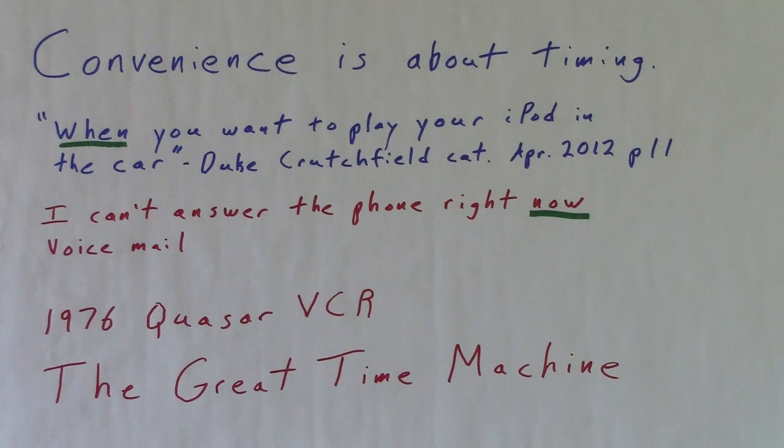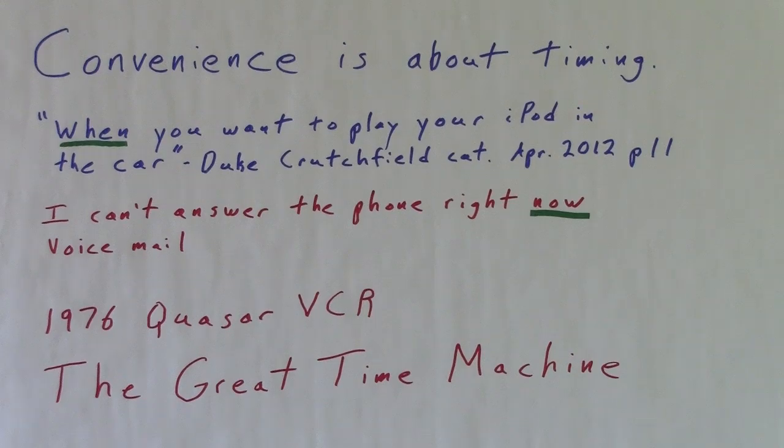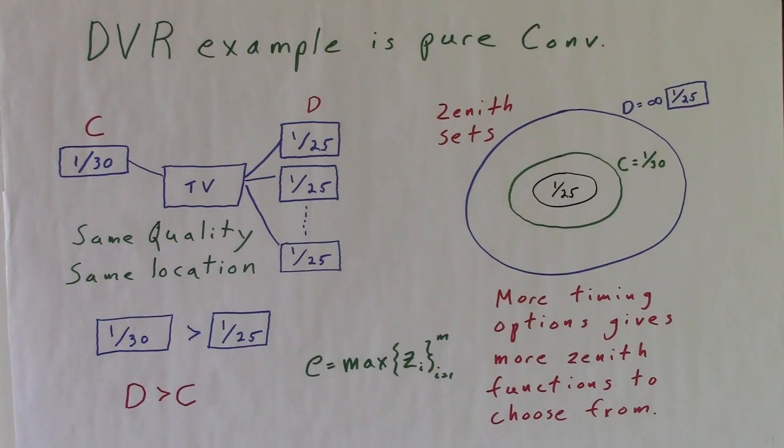Convenience is about timing, when you want to play your iPod in the car, according to Duke in the Crutchfield catalog. I can't answer the phone right now is a common voicemail greeting. In 1976, the Quasar VCR was called the Great Time Machine. The DVR example from my first video is pure convenience, since image quality and location are constant.